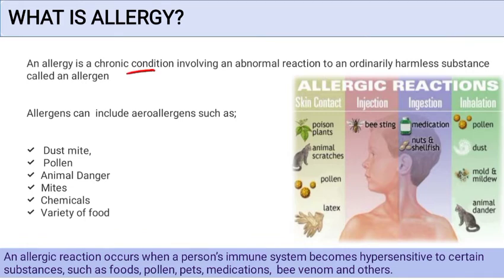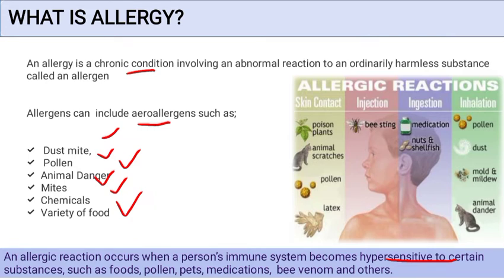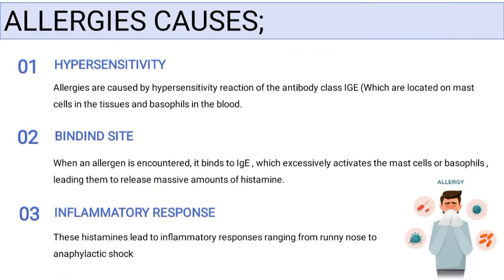Allergens can include aero-allergens such as smite pollen, animal dander, mites, chemicals, and a variety of foods. Allergic reactions occur when a person's immune system becomes hypersensitive to certain substances such as foods, pollen, pest medications, bee venom, and others. Every one in ten people suffers from some type of allergy, which can occur through skin contact, injections, or inhalation.